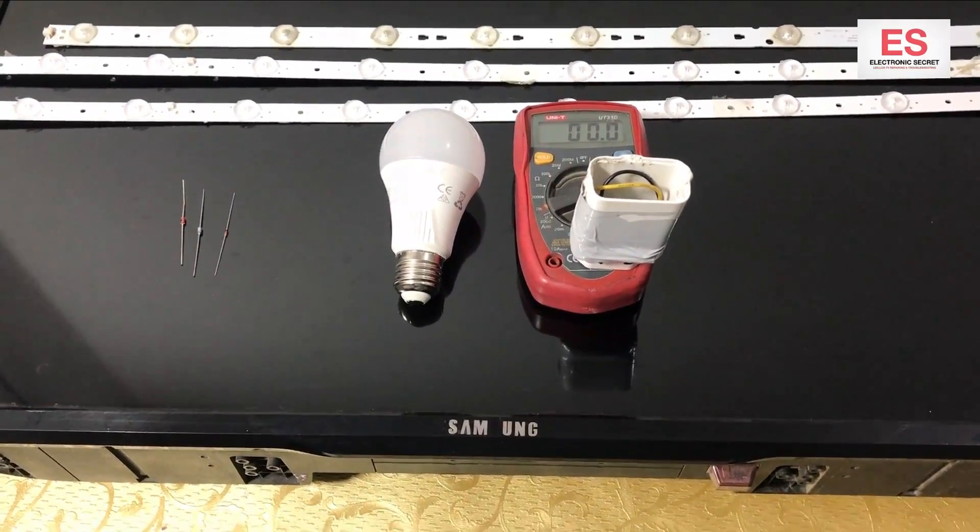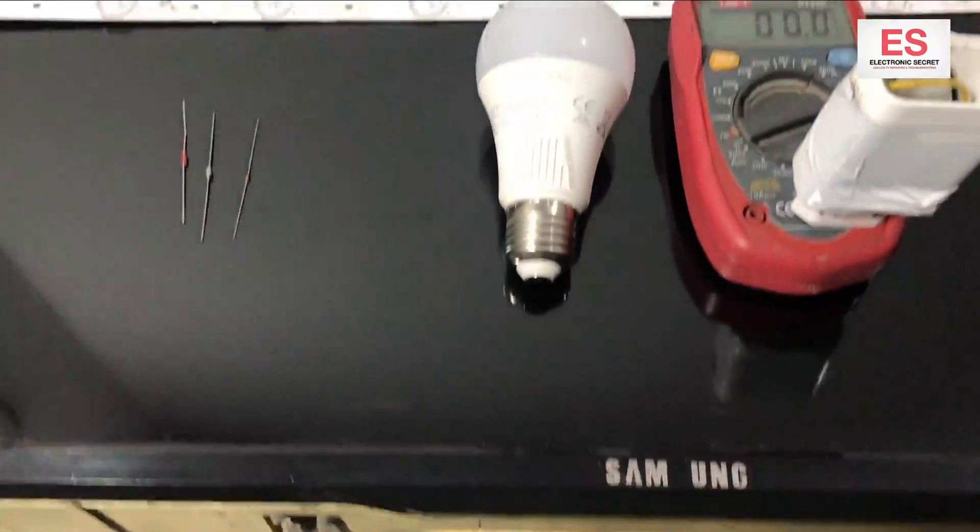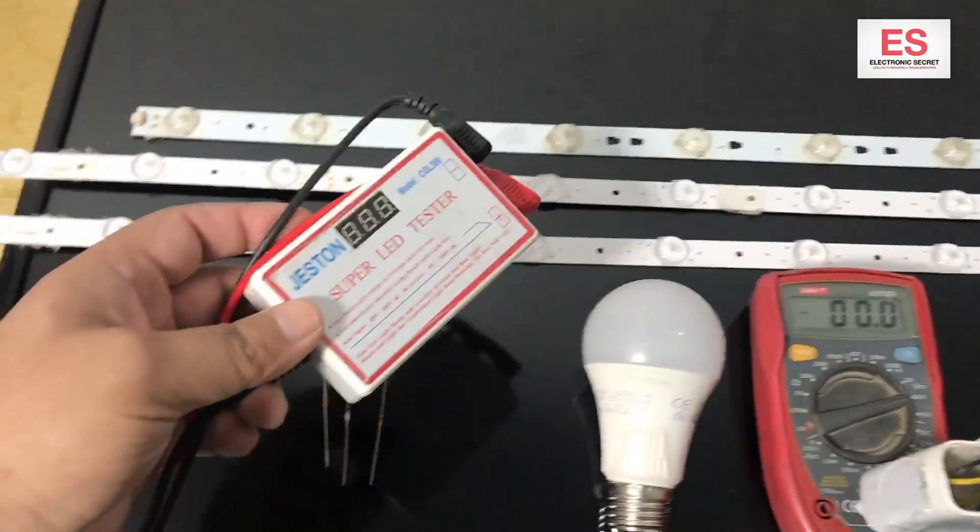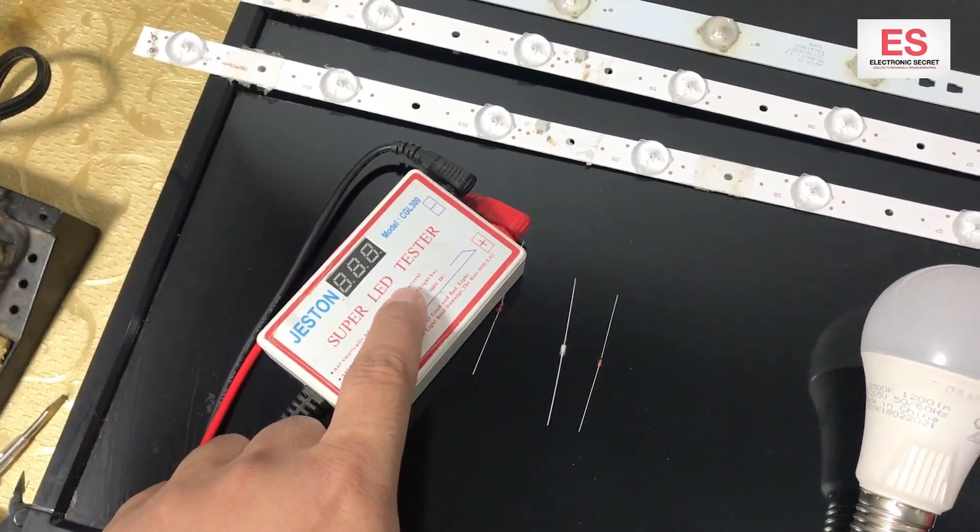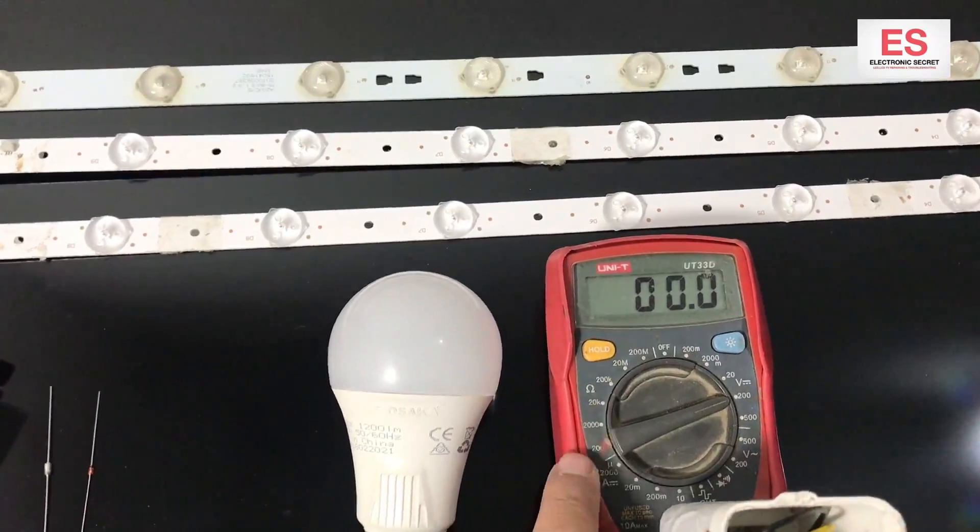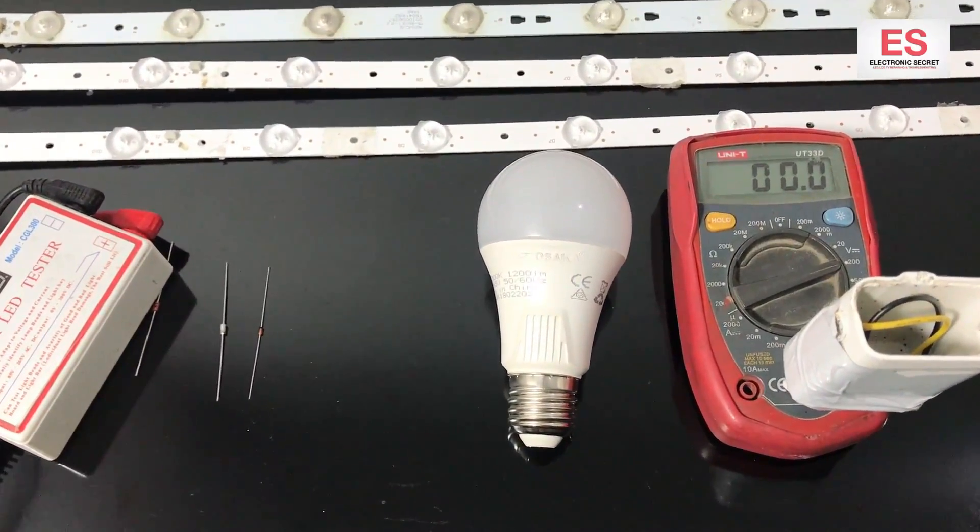These are zener diodes, you can also check them. You can also check these from a backlight tester. This is the original backlight tester technicians are well known of, but it is very costly. I will make it using a multimeter in almost zero cost.